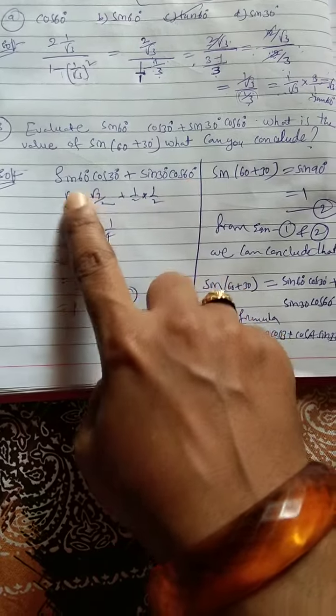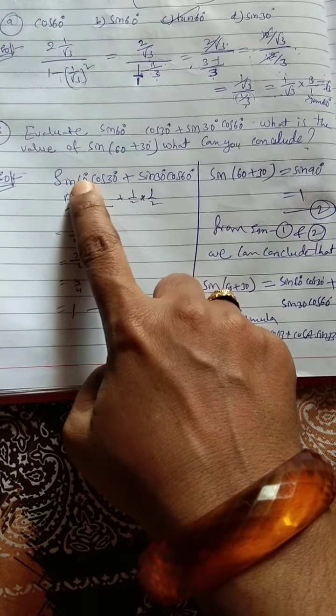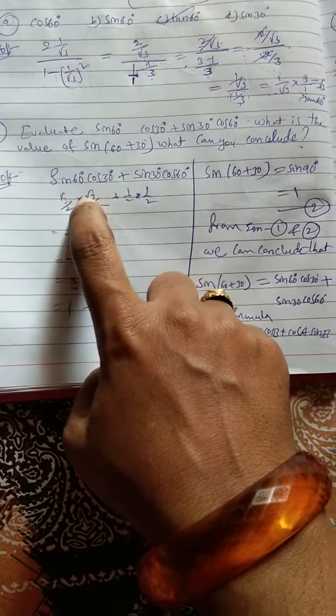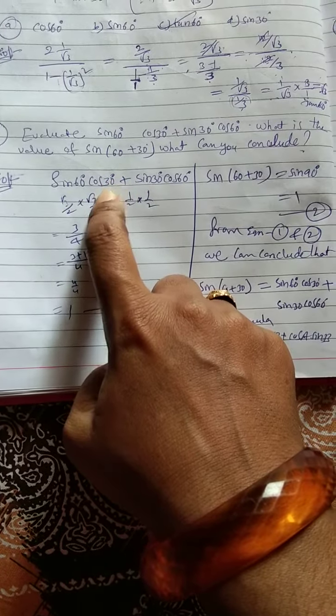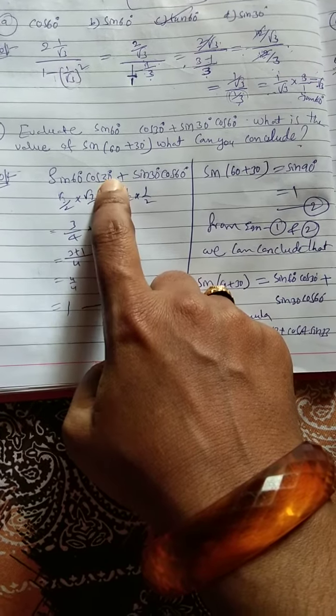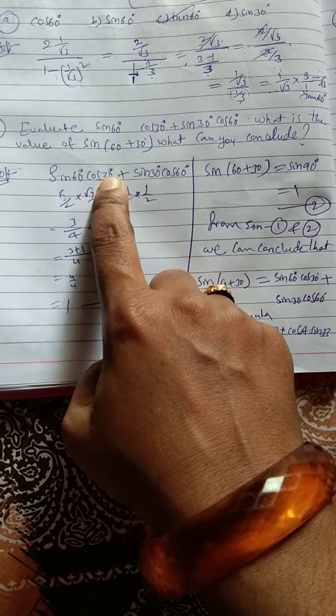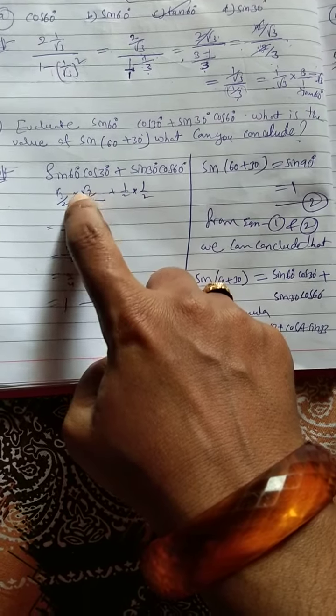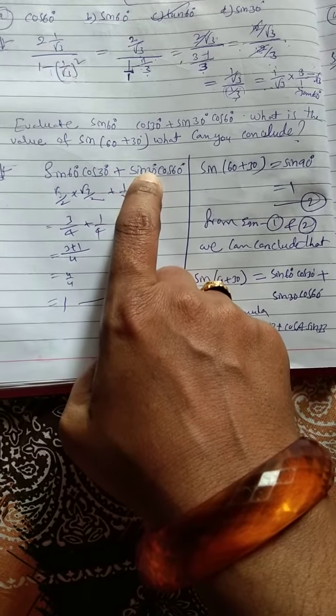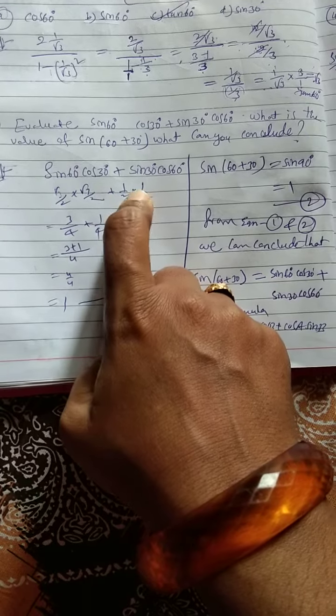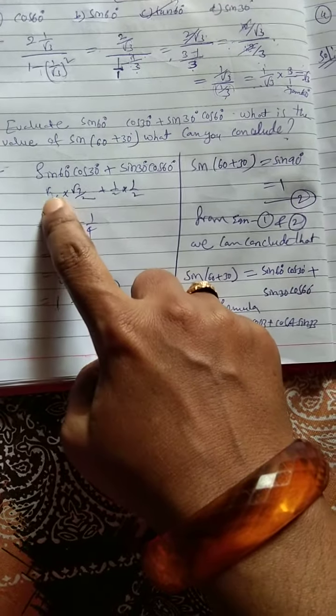You have to substitute the values. Sin 60 means root 3 by 2 into cos 30 means we can write root 3 by 2. Cos 30 equals sin 60 value, so root 3 by 2. Plus sin 30, 1 by 2, cos 60 also 1 by 2.